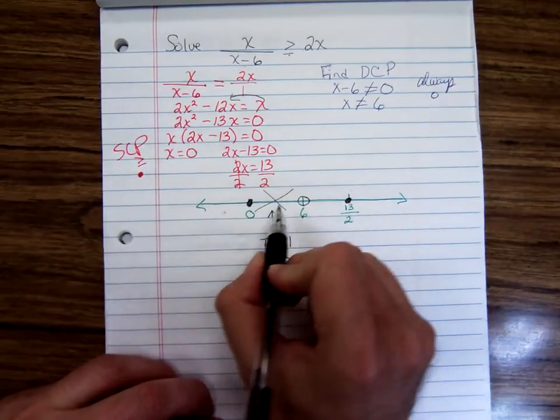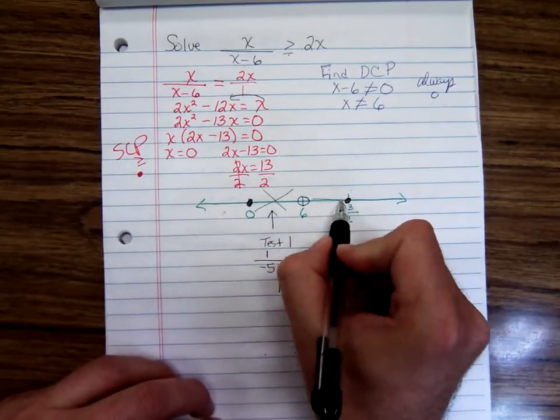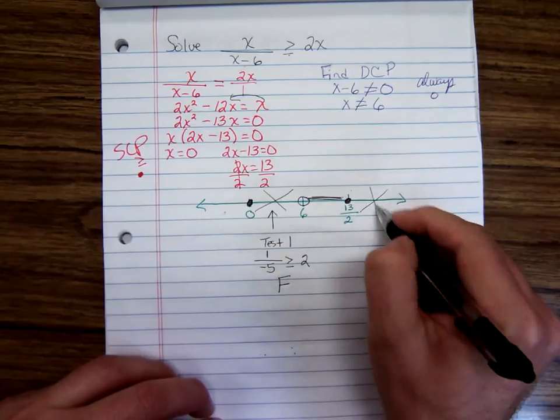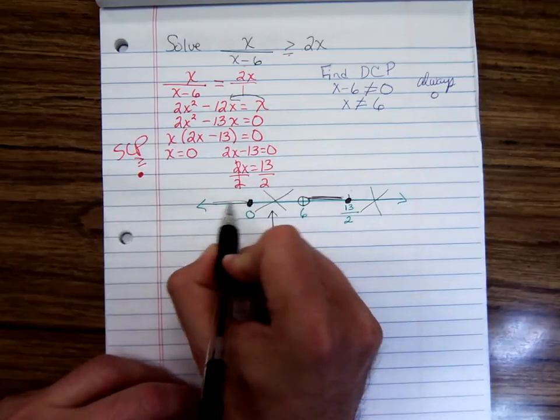So the way these things alternate, false, true, false, this one here would be true.